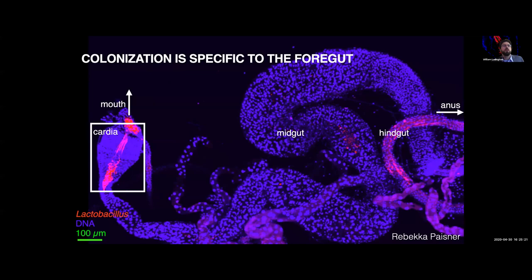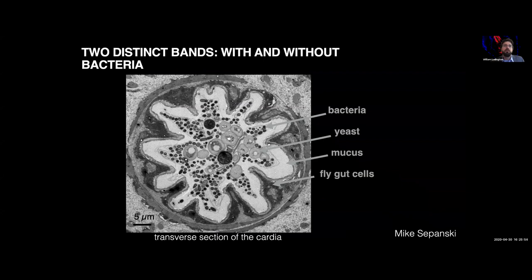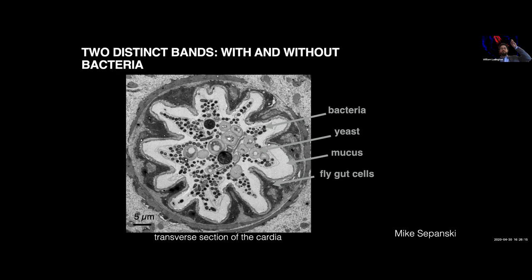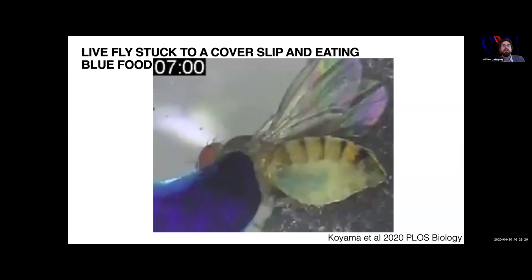Looking closer at the cardia region, you can see individual cells — they're localized to very specific lines inside of the gut. If we take a cross section of that gut, the individual bacteria appear as black dots. There's a mucus layer, just like in our gut, and fly cells. The bacteria are packed into specific parts — into folds or furrows — with bacteria appearing as black dots coming out of the page. We really wanted to understand how these bacteria get into these furrows and where they go inside the gut.